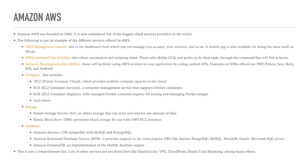For databases, Amazon offers platform-as-a-service options. Amazon Aurora is a database compatible with MySQL and PostgreSQL. Amazon RDS — Relational Database Service — provides engines for the most popular databases: Aurora, PostgreSQL, MySQL, MariaDB, Oracle, and Microsoft SQL Server. Finally, Amazon DynamoDB is an implementation of a NoSQL database engine. Whatever environment you come from, whatever database you want to use, whatever operating system you are comfortable with, you will find something in Amazon AWS.